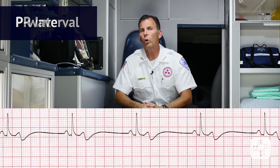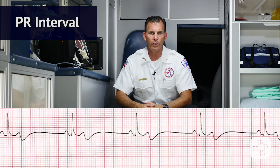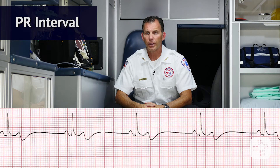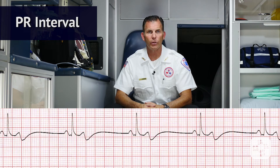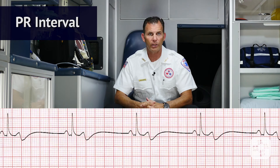Now we want to know what the PR interval is for this ECG. The PR interval is normal — it's less than 0.20 seconds. Is the PR interval constant? Yes.